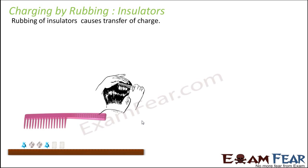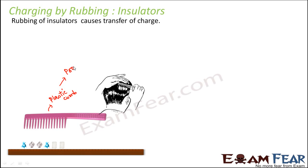Let us take the example of this plastic comb. Plastic is a poor conductor of electricity, or you can say an insulator. So when you rub this plastic comb on your hair, due to the rubbing of the comb and the hair, there is a transfer of charge. The electrons get transferred from the hair into the comb, and that is how the comb gets electrically charged.